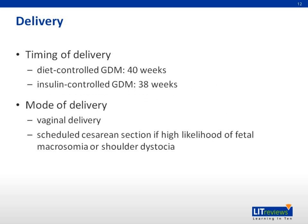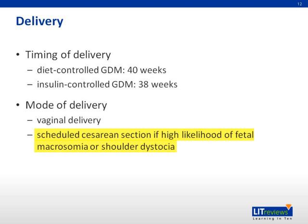Delivery: the timing of delivery for diet-controlled gestational diabetes mellitus is by 40 weeks, and for insulin-controlled gestational diabetes mellitus is 38 weeks gestation. The mode of delivery may be vaginal or caesarean section if there is a high likelihood of fetal macrosomia with possibility of shoulder dystocia.